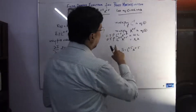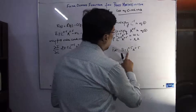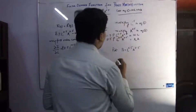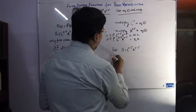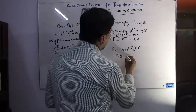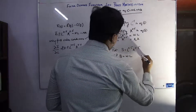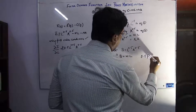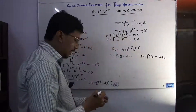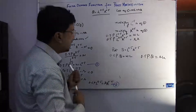Substituting Q = L^0.5 · K^0.5 into both equations, we get: 0.5 · P · Q = W · L from the first equation, and 0.5 · P · Q = R · K from the second equation.